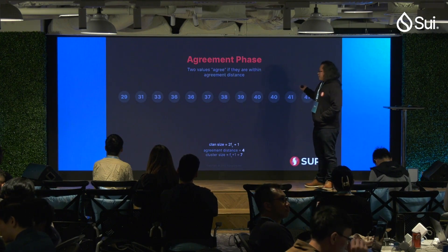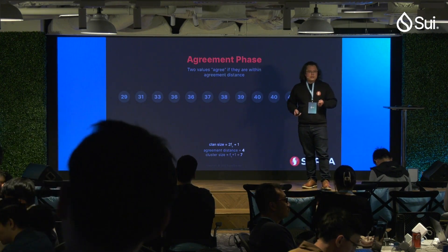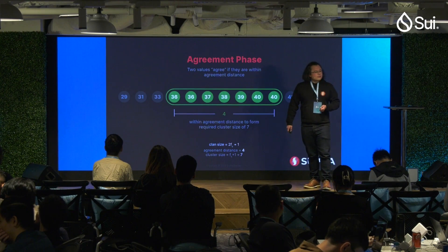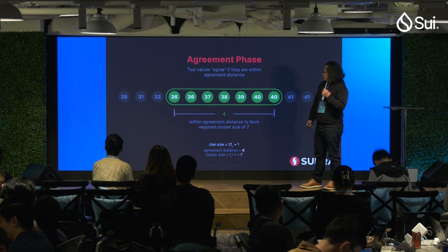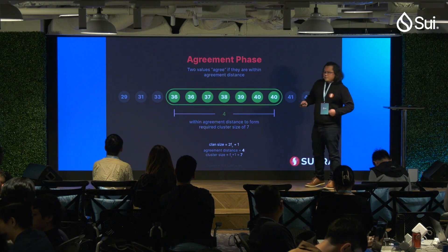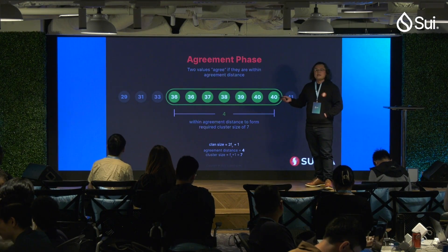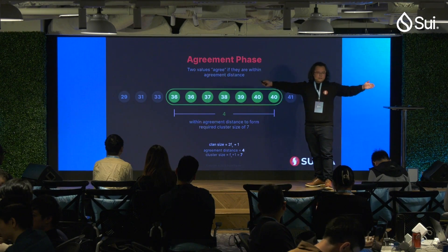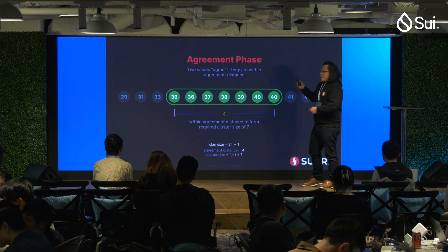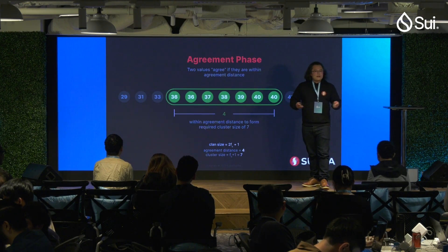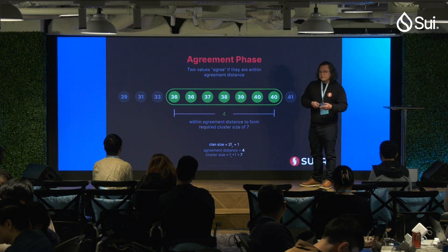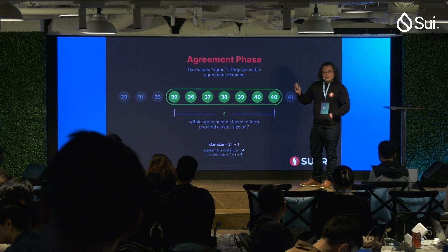What are the aggregators agreeing on? The aggregators wait for 51% of the nodes in the clan to send a response, and what we seek is what we call a coherent cluster. We wait for 51% of the responses, and those values have to be within a certain distance from each other. The nodes find the median value and submit it to an aggregator, which waits for 51% of responses and looks for a coherent cluster composed of median values within a certain distance.